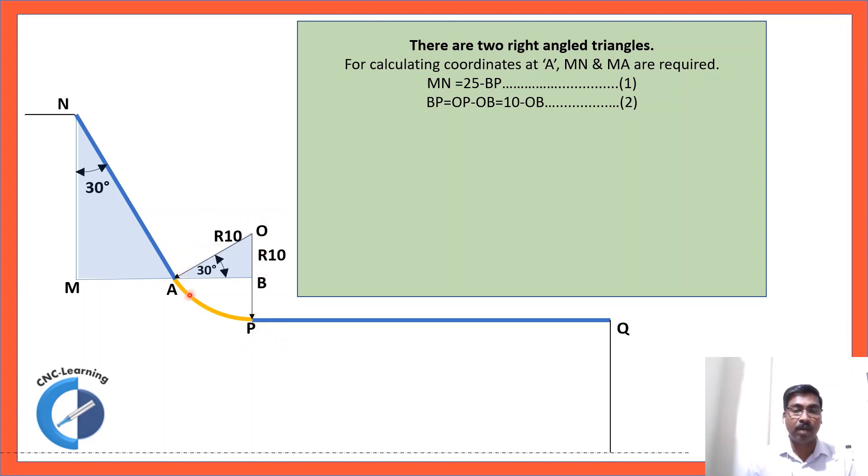How to calculate BP? BP is nothing but OP minus OB. OK. OP is the radius of this arc. So, 10 minus OB. Now, OB we need to calculate. OB is opposite side for this 30 degree. So, we know sin 30 is opposite side by hypotenuse. That means OB divided by this radius 10. So, OB is equal to this 10 multiplied by sin 30. So, we get 0.5 into 10.